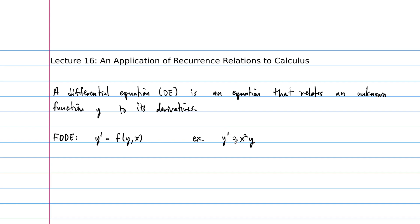Notice we have an equation for the derivative that's in terms of the independent variable and the unknown function itself. There are many different possibilities — we could have X plus Y, or Y prime equals 2Y where X is not even involved. This is a first order differential equation.